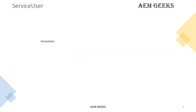There are three important points you must understand about service users. One is how to create a service user. Another is how to add permissions to your service user. The third is binding — your service user must be bound to a specific bundle. You should create a specific service user for your project; at least one, but you can have multiple service users for different operations. That service user should be bound to your bundle.